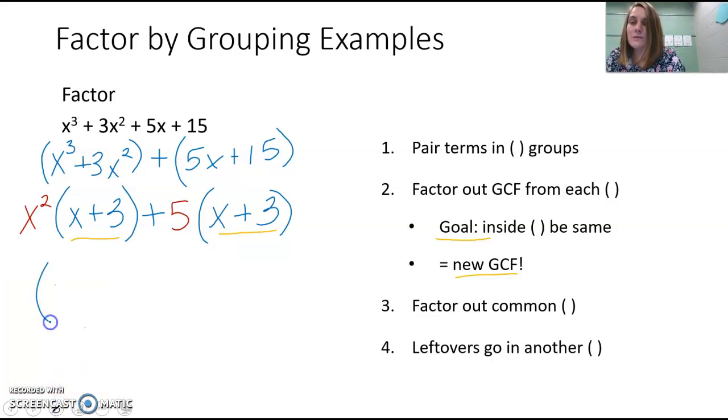If we do that, we have x + 3. And then in the other parentheses is what's multiplying with x + 3. x + 3 is multiplying with x². Plus, x + 3 is multiplying with 5. And that is our answer.